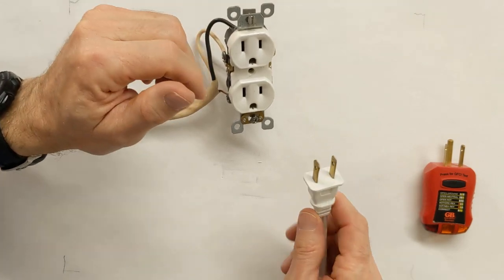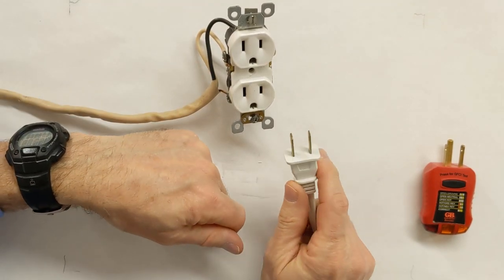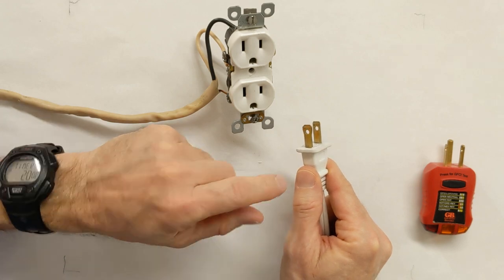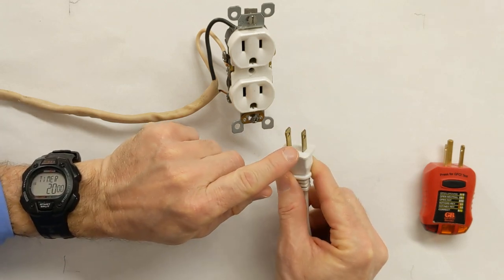Then the plugs that we plug into the outlets are polarized too. They have one wide blade and one narrow. This ensures polarity as the wiring passes into our appliances. If you find an older appliance or extension cord where the blades are the same width, I recommend not using it because polarity won't be enforced.